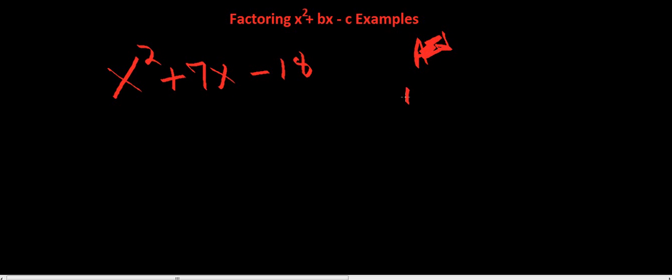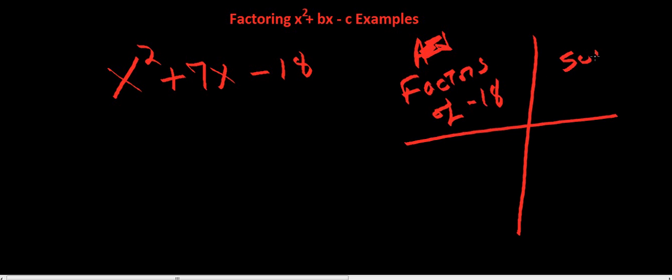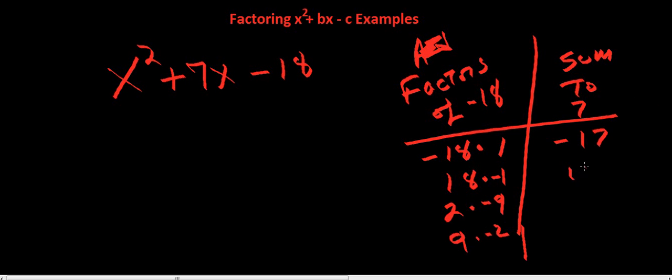We want factors of -18 that sum or add to 7. You can do -18 times 1, 18 times -1, 2 times -9, or 9 times -2. List some of the factors and add them together. This one here adds up to 7, so we know our factors are going to be this.